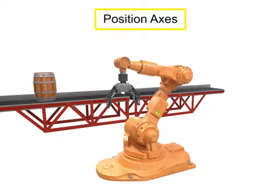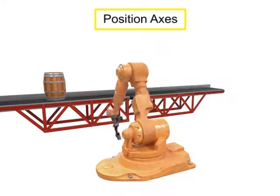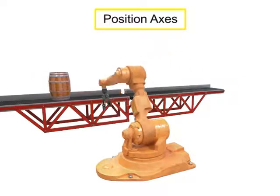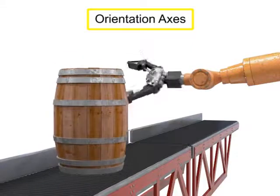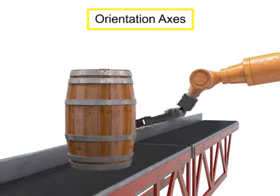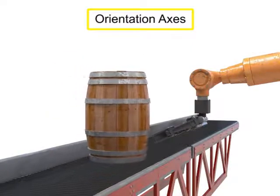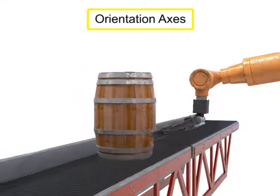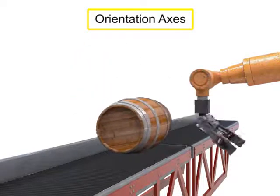The position axes movement at the waist, shoulder, and elbow, along with the orientation axes movement of pitch, roll, and yaw, allow the robot to accomplish its tasks within the work envelope.